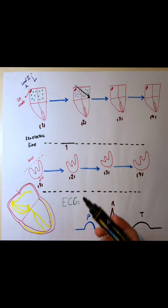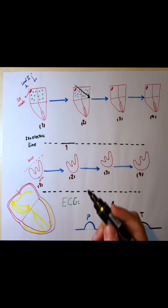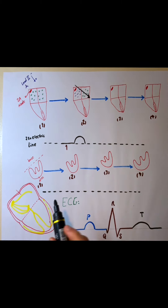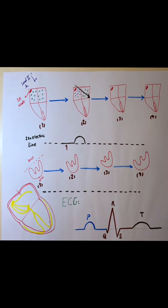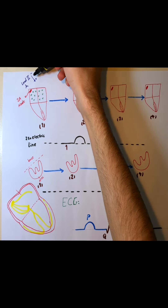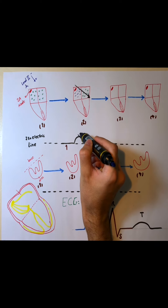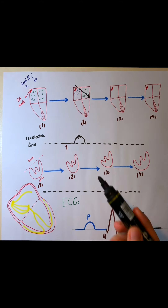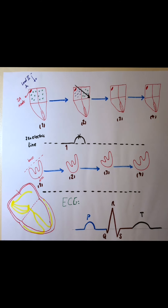In the second stage, where you see we have an electric current, we are going to have this depolarization wave. Because the direction of our vector is like Lead 2, we're going to have a positive wave. The peak of this wave is going to be reached when we have half negative charge, half positive charge in the syncytium of our atrium.